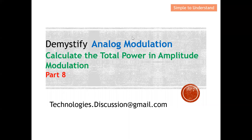Hello everyone, thank you so much for your time today. I'd like to continue our discussion on analog modulation. Our topic for today is how to compute the total power in amplitude modulation. I'm going to show you how to compute the total power for three types of amplitude modulation: double sideband full carrier, double sideband suppressed carrier, and single sideband suppressed carrier. This will be part eight of our series discussion.